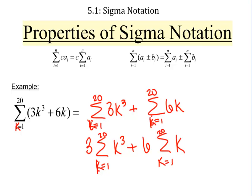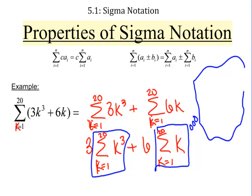So now notice that k going from 1 to 20 of k cubed and k going from 1 to 20 of k, those match up with formulas that we have. k goes from 1 to 20 of k is making me think of i goes from 1 to n of i. And I know that that ought to be n times n plus 1 over 2.